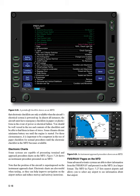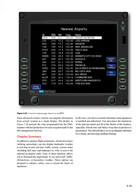FMS/RNAV pages on the MFD: some advanced avionics systems are able to draw information from the FMS/RNAV and present it on the MFD in a larger format. The MFD in Figure 5-25 lists nearest airports and allows you to select any airport to see information about that airport. Some advanced avionics systems can integrate information from several systems in a single display. The display in Figure 5-26 presents the route programmed into the FMS, together with fuel predictions for each waypoint made by the fuel management function. Chapter summary: in addition to primary flight instruments, advanced avionics — utilizing microchips — can also display landmarks, weather in real-time or near-real-time, traffic, terrain, system status including fuel state and endurance, with or next to the selected navigation route.